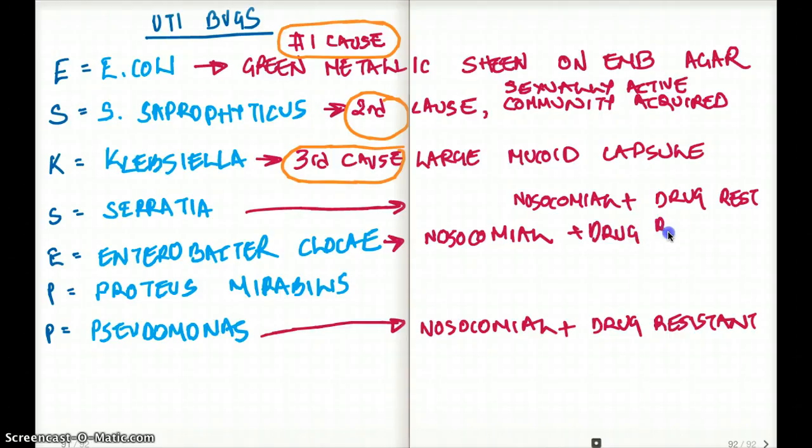These all three are going to be nosocomial and drug resistant. Now if all of them are nosocomial and drug resistant, how are we going to know which one is which? Now Serratia is the one that's going to cause red pigment. So that's going to differentiate between the two. We know that Pseudomonas causes a fruity smell. Fruity smell that is also going to be caused with Pseudomonas. So these are the ways you can differentiate between the three nosocomial drugs.